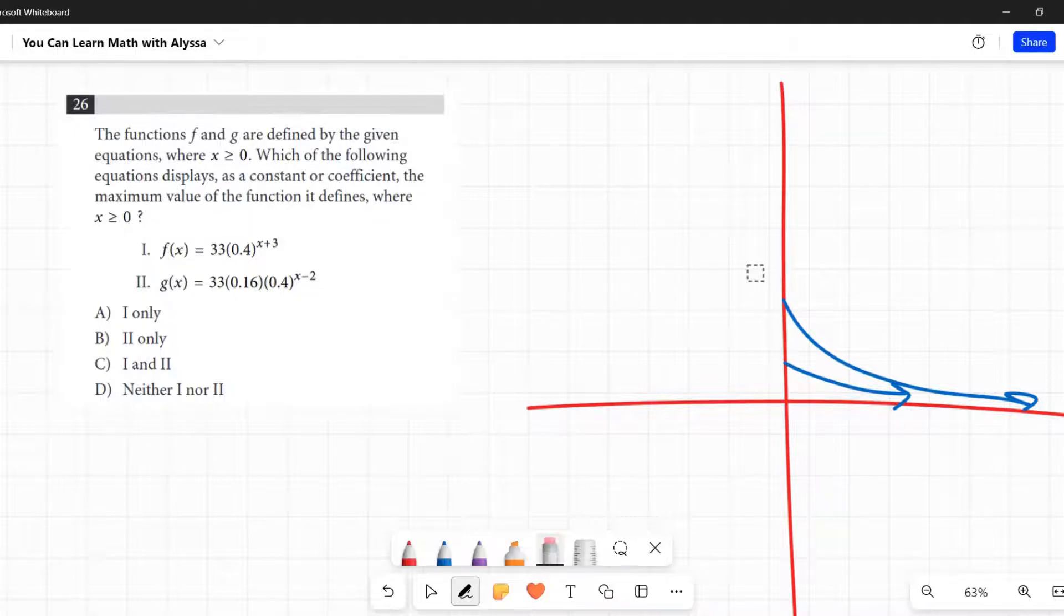Then it says, where x is greater than or equal to zero, which of the following equations displays as a constant or coefficient the maximum value of the function? Let's look at that second part first: the maximum value of the function. Both of these functions that we've got here, they're starting on the y-axis and then they are going down towards that x-axis. They are approaching it, they are approaching zero, they're never crossing it, but they're getting lower and lower and lower forever. So where is the maximum value for both of these? For both of them, it's where x is zero, right on that y-intercept. Every other value is going to be lower than that. Those are the maximums. At this point, before going further, we need to determine the maximum value of both of those.